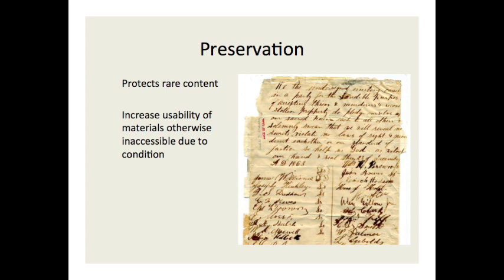Here's an example of why a digital copy can be better for users and for preserving the originals. One public library has a series of books on the architecture in the community. The series was created by a local author and is no longer in print. The books have been used annually in a middle school project and are beginning to show wear and tear. In an effort to protect the books from further damage while still making them accessible to a large number of students, they were digitized and made available on the internet.